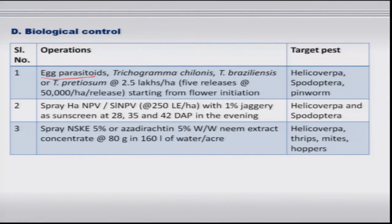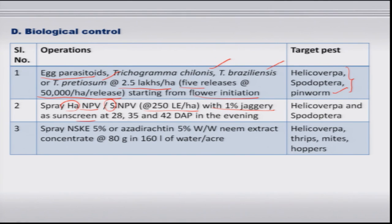Good biocontrol agents include egg parasitoids Trichogramma chilonis, brasiliensis, and pretiosum, released at 2.5 lakh per hectare in 5 batches at 50,000 per hectare per release starting from flower initiation, to manage defoliators and pinworm. Microbial pesticides such as NPV for Helicoverpa and SLNPV at 250 LE per hectare — with 1 percent jaggery added as a sunscreen — should be applied at 28, 35, and 42 days after planting during evening hours. Botanicals such as NSKE 5 percent or azadirachtin 5 percent (commercial neem) can be applied against Helicoverpa and mites.